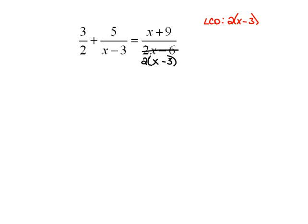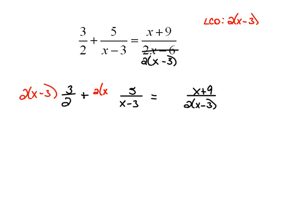So, we're going to rewrite our original problem. I'm going to rewrite it as 3 halves plus 5 over x minus 3 equals x plus 9 over, now I'm going to rewrite this in the factored form. And I'm going to multiply every single term by the common denominator of 2 times x minus 3.